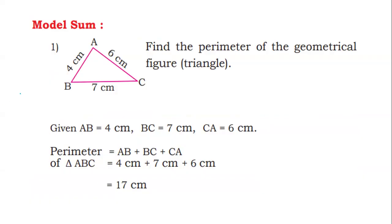Model sum. ABC is a triangle. Find the perimeter of the geometrical figure. Given: AB = 4 cm, BC = 7 cm, CA = 6 cm. Perimeter of triangle ABC = AB + BC + CA = 4 + 7 + 6 = 11 + 6 = 17 cm.